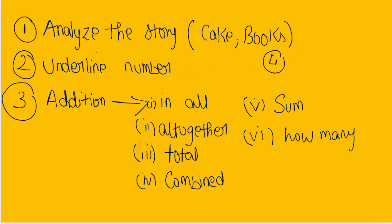The fourth step is to add the numbers — this is the final step. So, this is how you should analyze word problems. First step: analyze the story. Second: underline the numbers. Third: find out the clue words. If you see 'in all,' 'all together,' 'total,' 'combined,' 'sum,' or 'how many,' you are going to do addition. Fourth step: add the numbers and get the answer. We will do some examples.